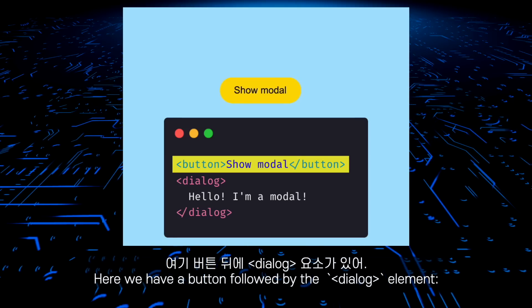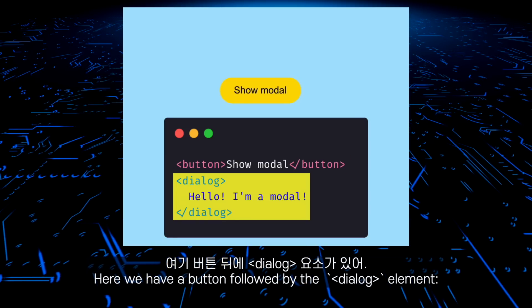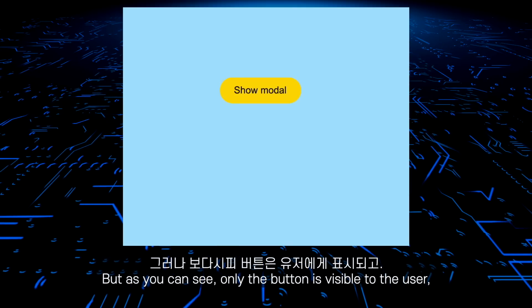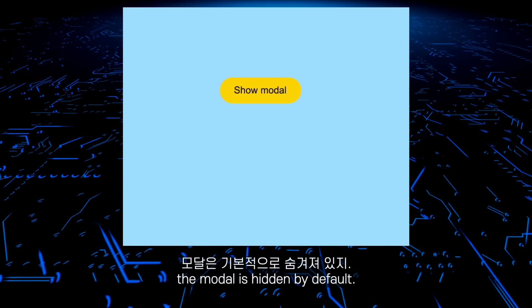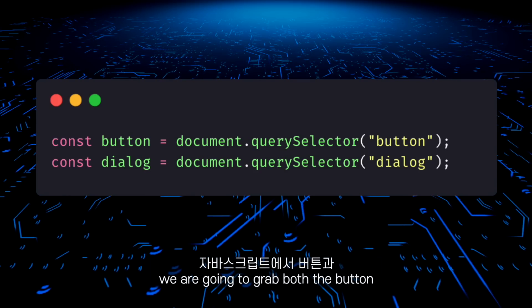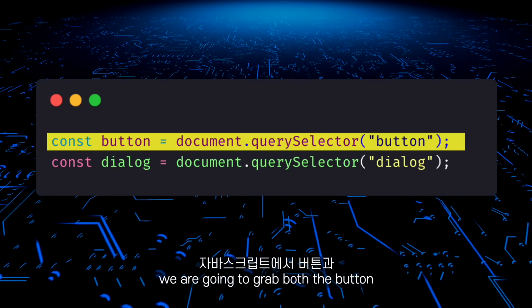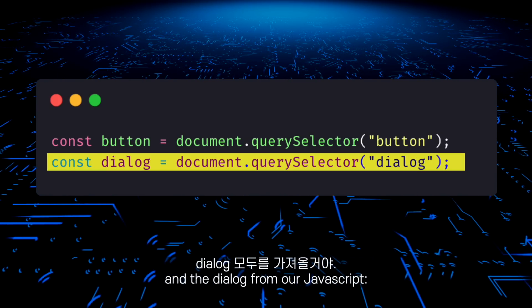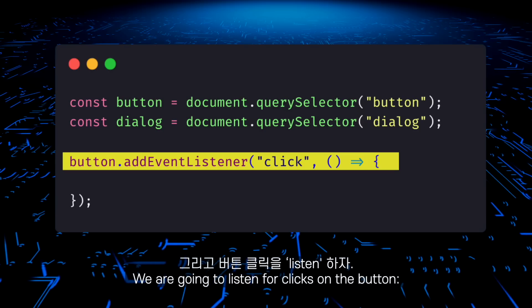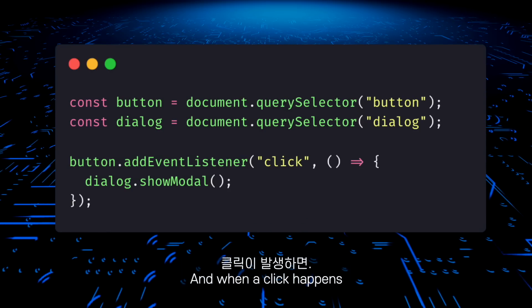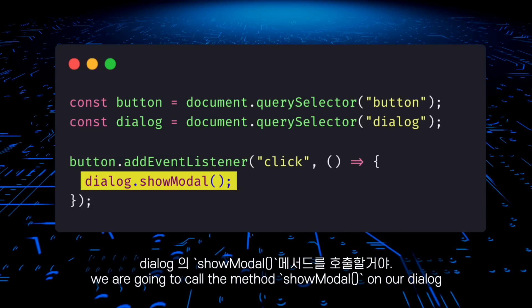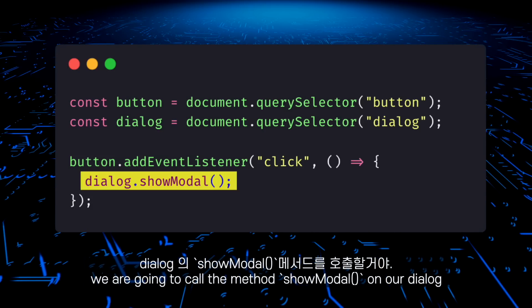Let me show you. Here we have a button followed by the dialog element. But as you can see, only the button is visible to the user — the modal is hidden by default. To open the modal, we are going to grab both the button and the dialog from our JavaScript, listen for clicks on the button, and when a click happens, call the method showModal on our dialog.